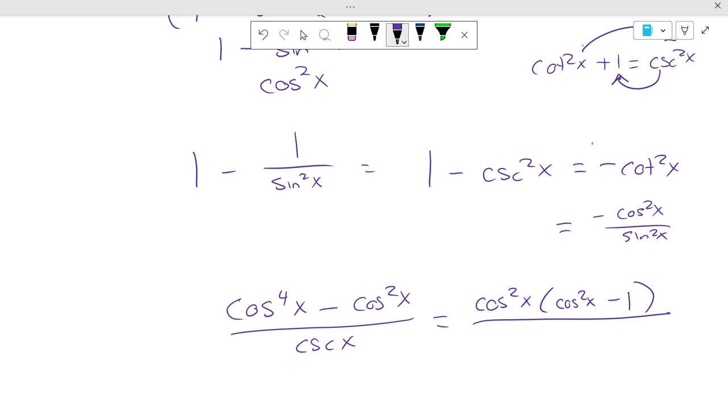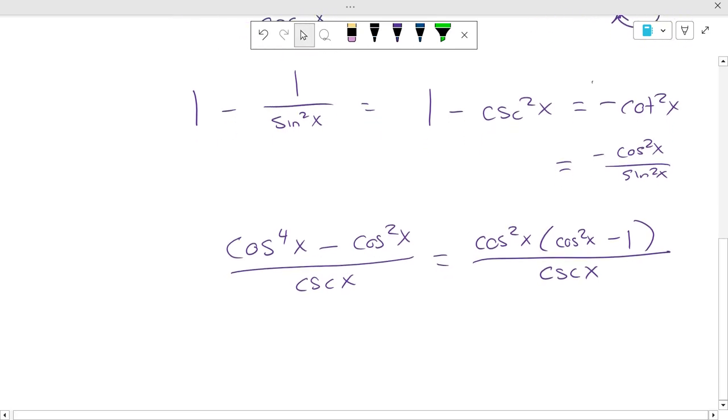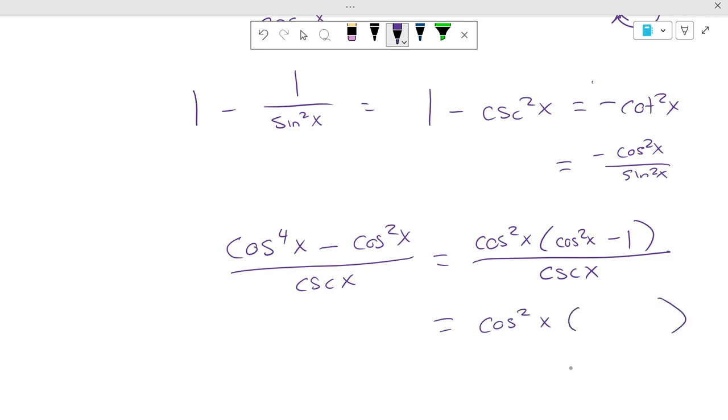Come on. Factoring rules. Algebra 2. That was a long time ago. Some people are still presently in algebra 2. What's cosine squared of x minus 1 the same as? Nope. Negative sine squared of x.